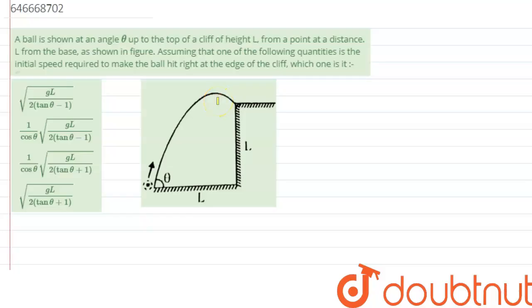A ball is thrown at an angle theta up to the top of a cliff of height L from a point at a distance L from the base, as shown in the figure. Assuming that one of the following quantities is the initial speed...